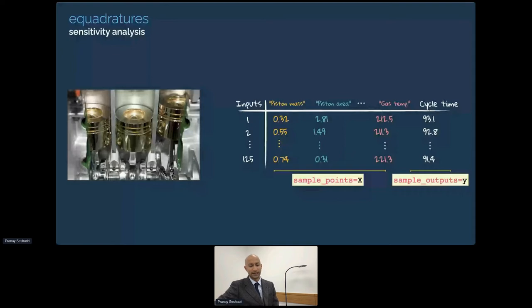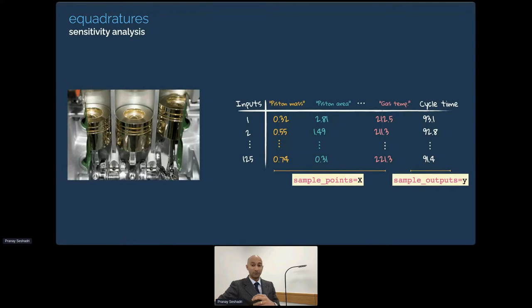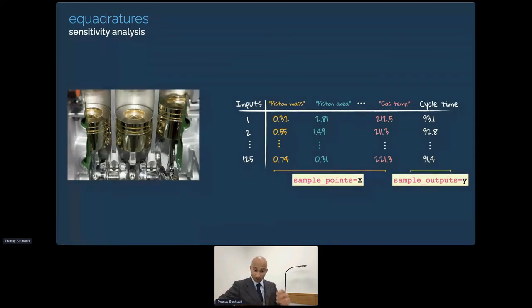Here's another example. Imagine you're given a dataset pertaining to a piston: piston mass, piston area, gas temperature, and the output quantity of interest — the cycle time. Throughout engineering, one often asks which inputs are important with respect to the cycle time. eQuadratures is perfectly poised to answer such a question. The polynomial approximation had an R-squared value of one, indicating a very good fit. The most important parameter, based on the total Sobol indices, was found to be parameter two: the area.